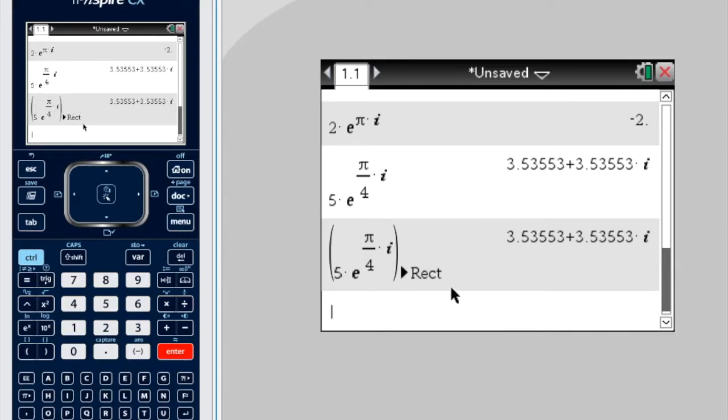If you remember, we changed the settings for this document from real numbers to rectangular complex numbers. That means the default answer is always going to be a rectangular or Cartesian complex number. If we want it to be polar, we can always change the settings.